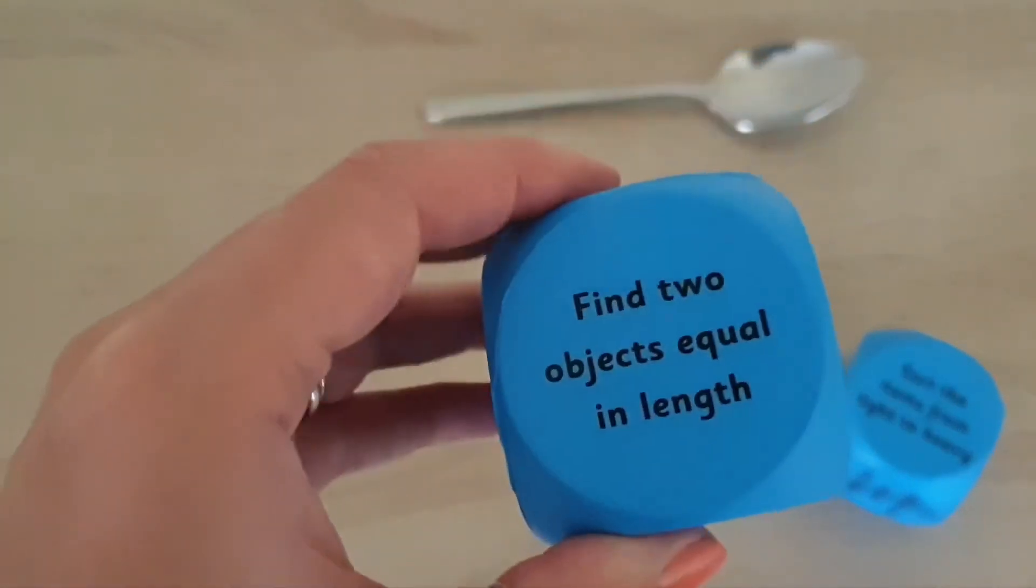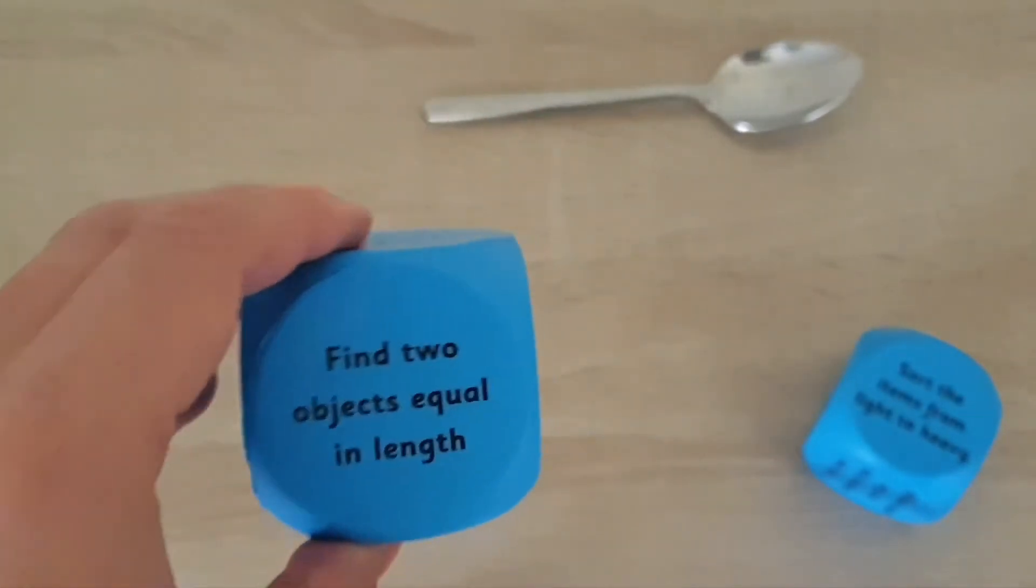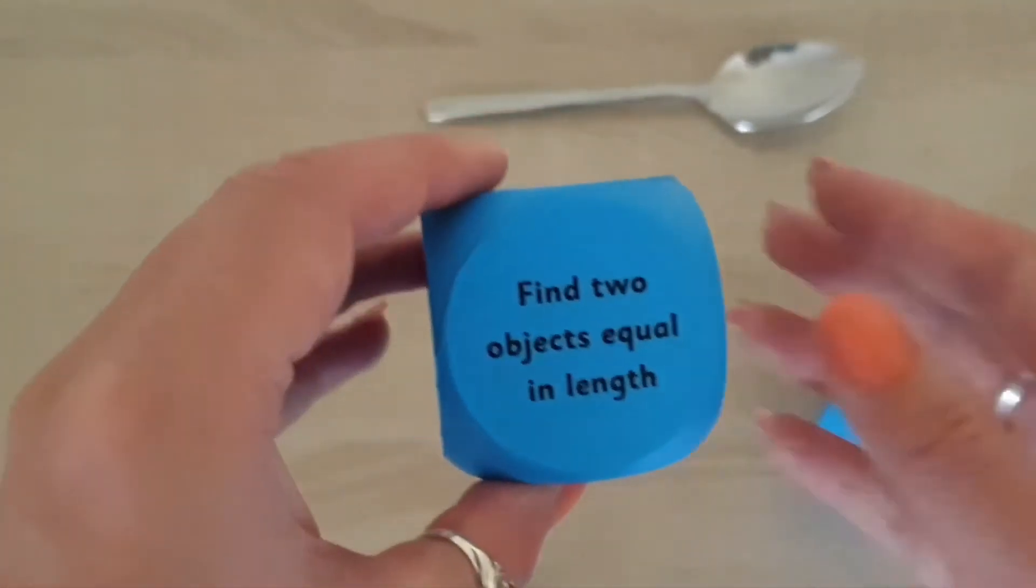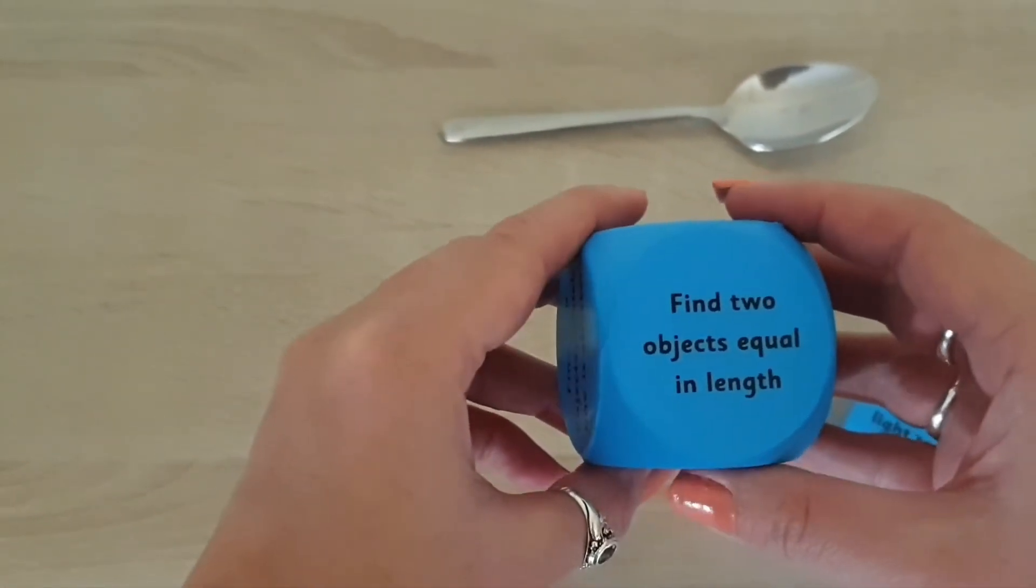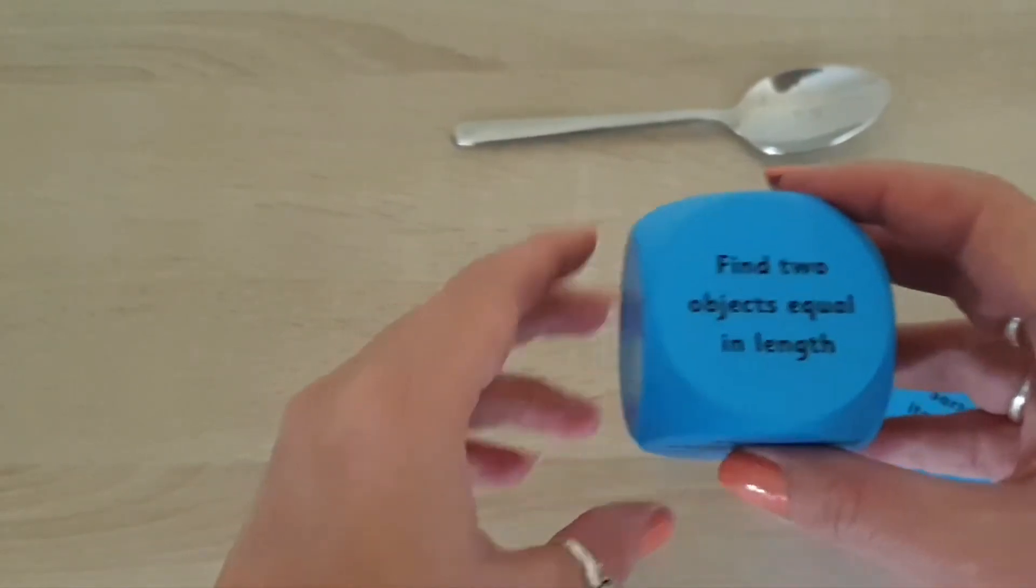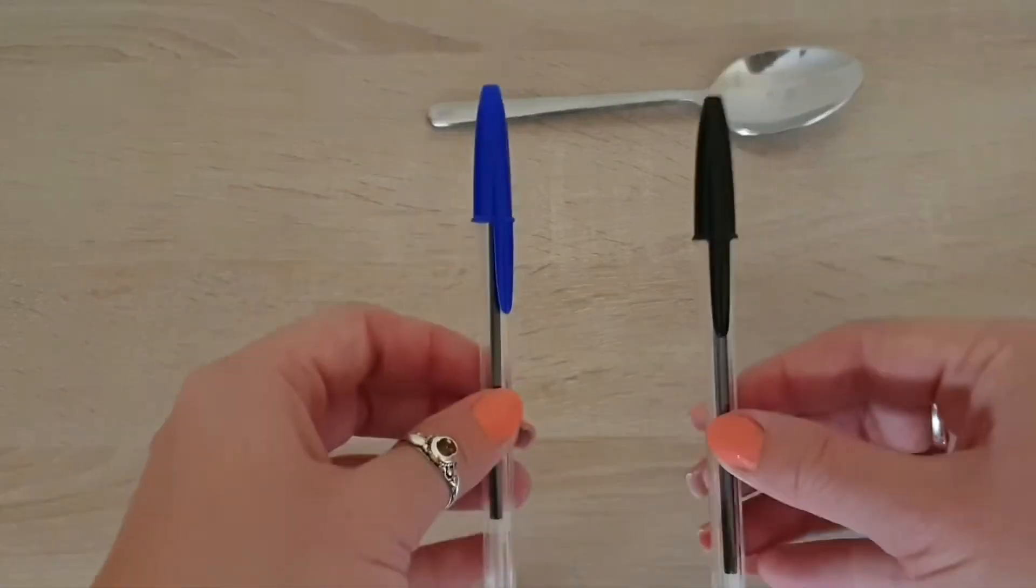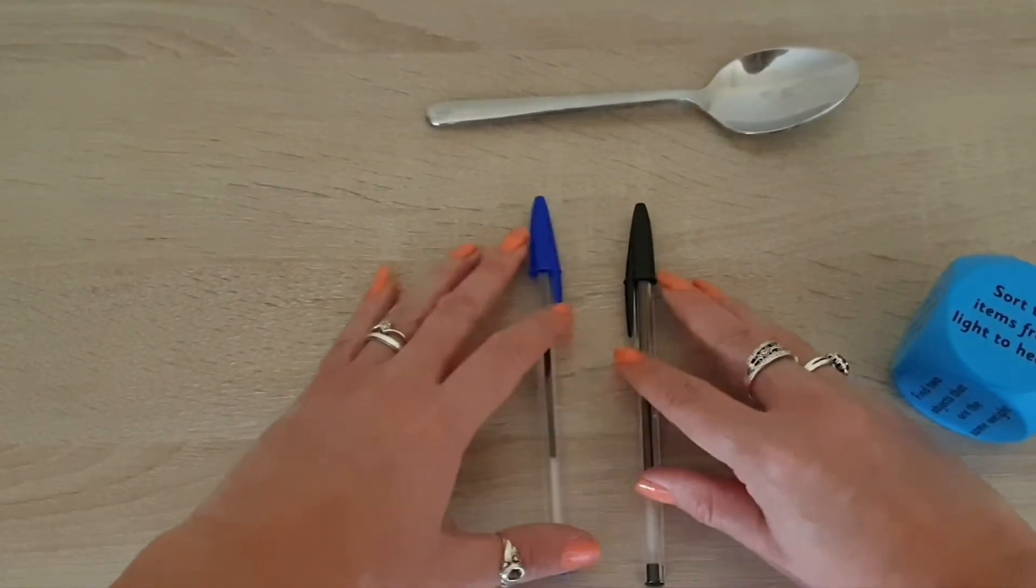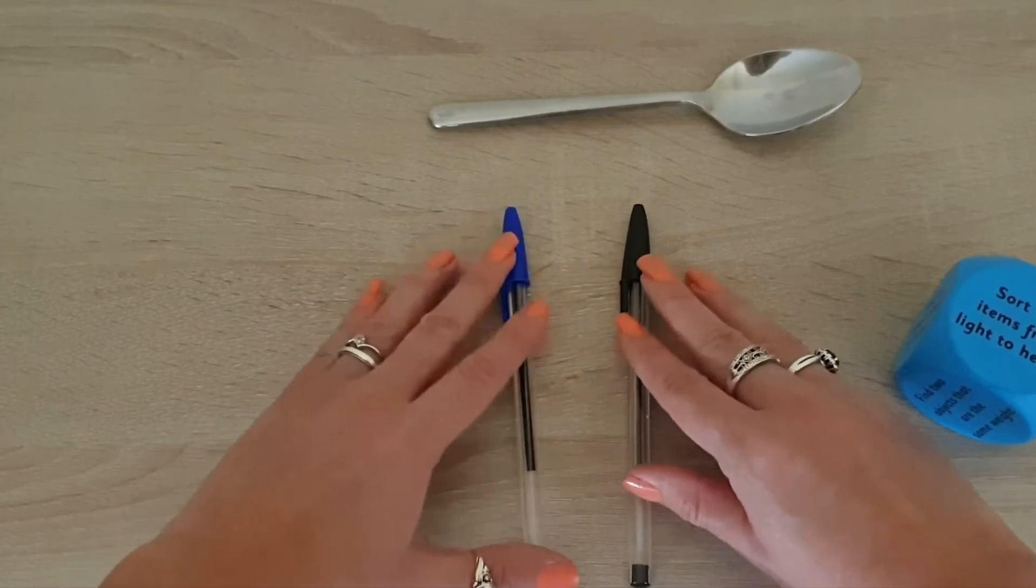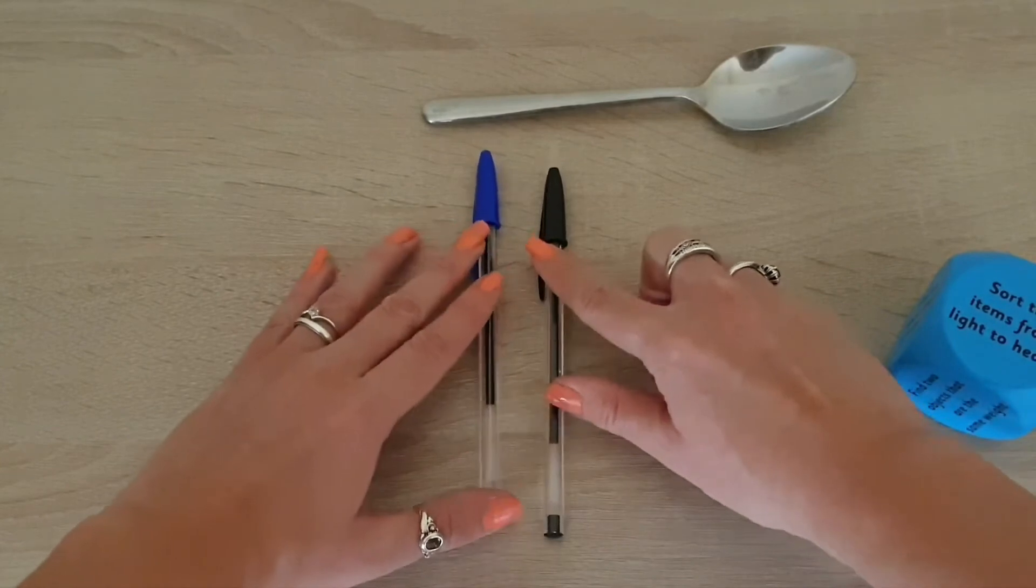So find two objects that are equal in length. Again, you'd be discussing with your child what the word equal means. Off we would go around the house and find two things that are equal in length, so the same length. For me, I'd be going off and finding two pens. I'd maybe be asking them as well to talk about how do we know that they're equal in length, what we're going to do to figure out that they are the same length.